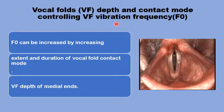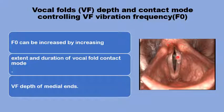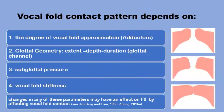The vocal fold depth, particularly of the medial ends, and the contact mode of these medial ends, can modulate the vocal fold vibration frequency, the F0. This F0 can be increased by the increase of the extent and the duration of the vocal folds contact, and also by increasing the depth of the contact — the depth of the medial ends of the adducted vocal folds.